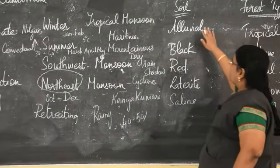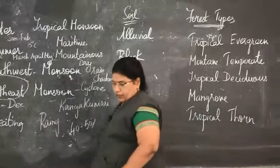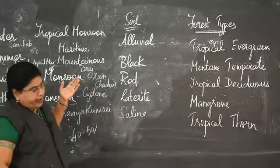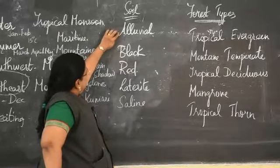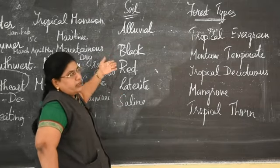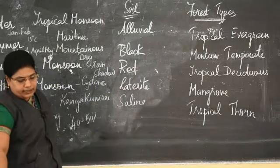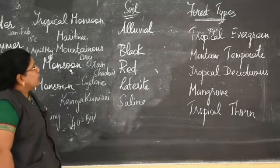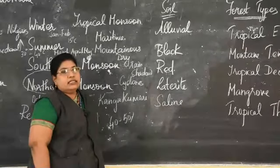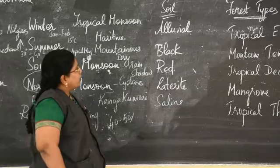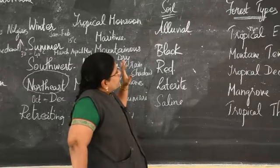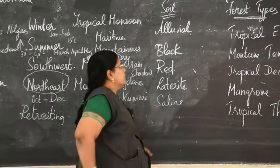Next, we move on to soils. Soils in Tamil Nadu are broadly classified according to their characteristics into alluvial, black, red, laterite, and saline soil. Rivers in Tamil Nadu carry minerals and deposit them along their banks, and that deposited soil is called alluvial soil, which is very fertile.